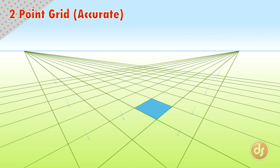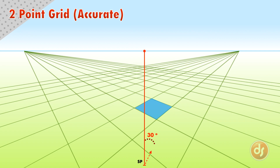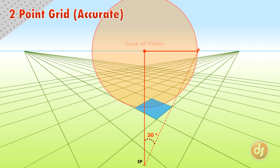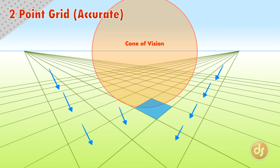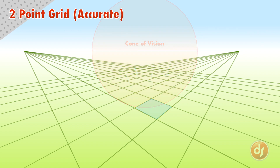Notice that the grid still looks strange as we get farther out. If we construct a cone of vision from our station point, we can see why. The strange-looking tiles fall outside of the cone of vision, meaning they are outside of the viewer's vision, so they look distorted. The most normal part of the grid lies inside the cone of vision and will make our drawings look more correct.